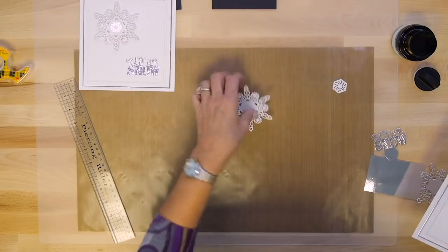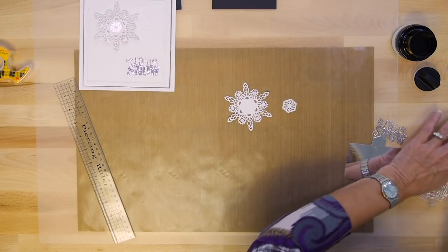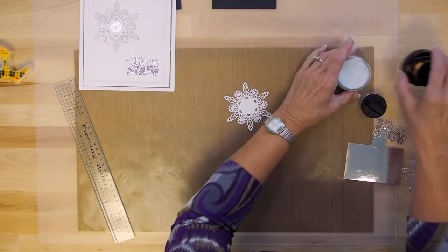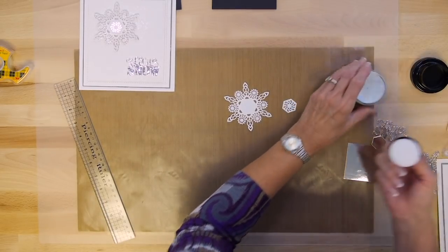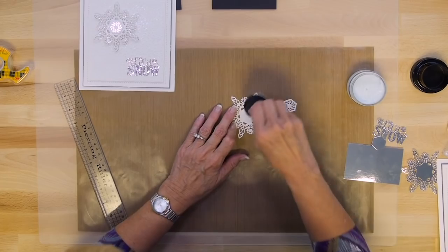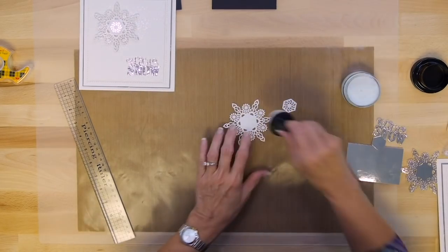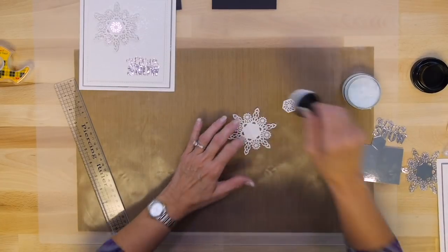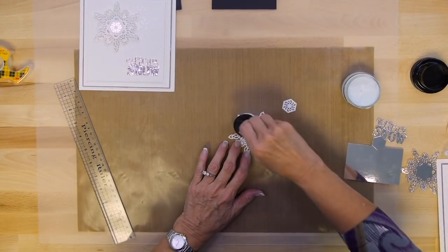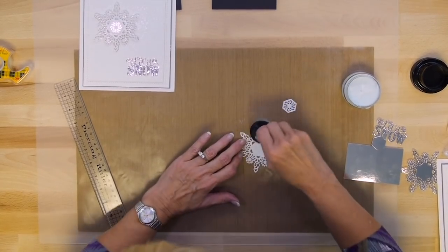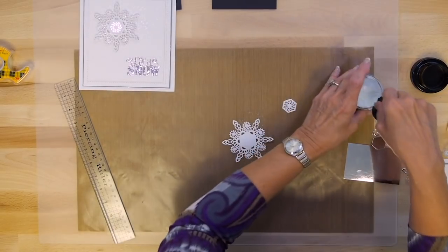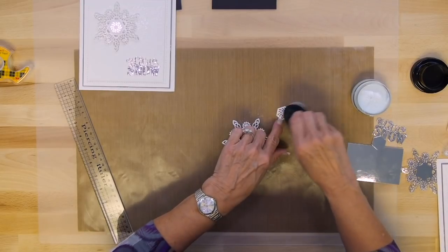So now I'm going to go ahead and do some more of the glitter kiss because I need to give this a second to dry. So I'm going to go back to my frosted sparkle here. And I'm just going to go straight to this snowflake. Just add that. So you have a lovely sort of iridescence coming from it. There we go. Really nice.